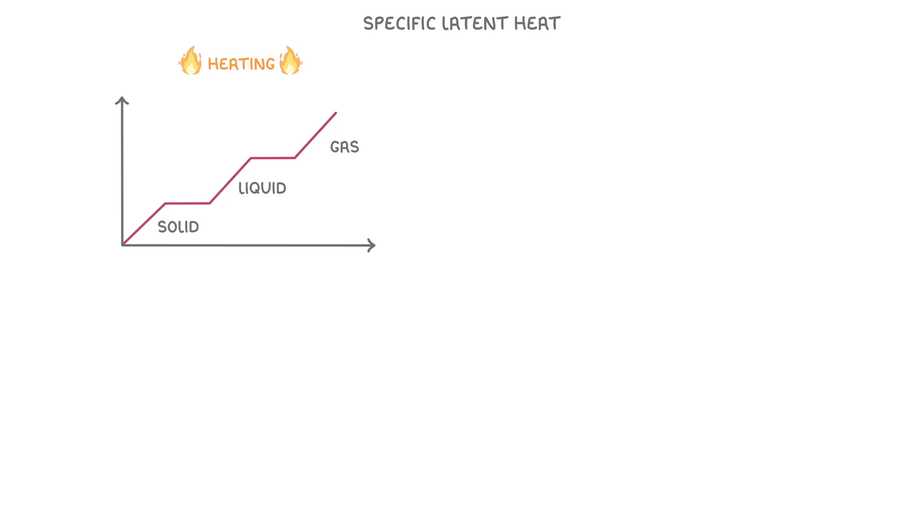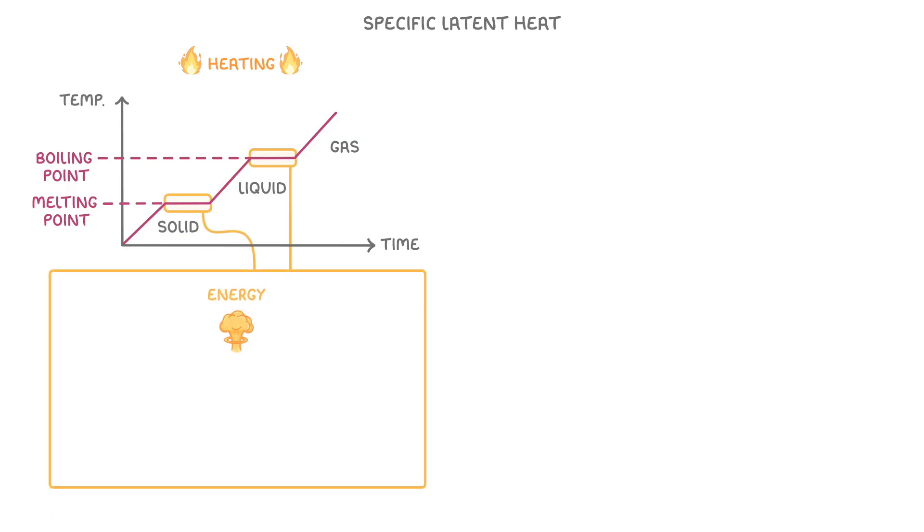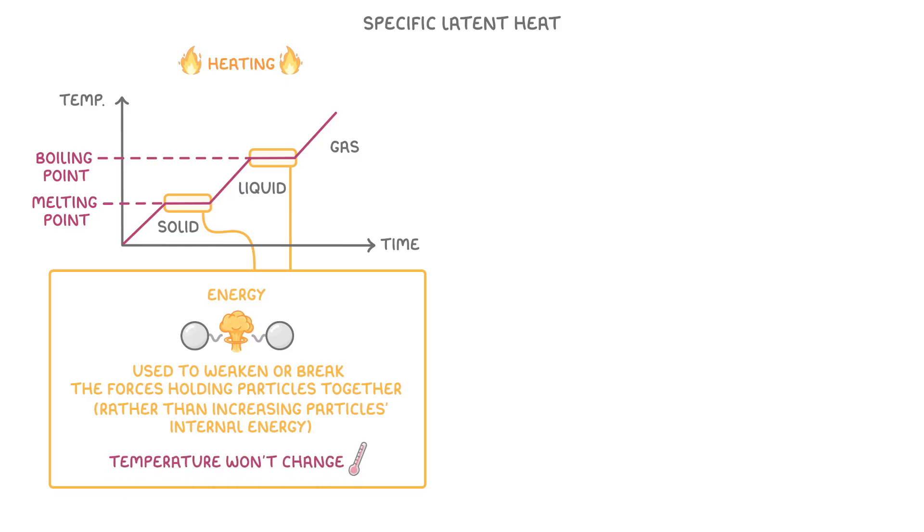If you take a look at this graph, which shows how the temperature of a substance changes with time as we heat it, you can see that it's not a straight line like you might expect. This is because when the substance is changing state, so at the melting point or the boiling point, the energy that we're providing is being used to weaken or break the forces holding the particles together, rather than increasing the particles' internal energy. And as temperature is just a measure of the average internal energy of the particles, the overall temperature won't change in these regions until all of the substance has changed state.